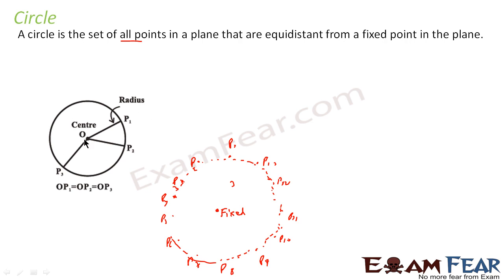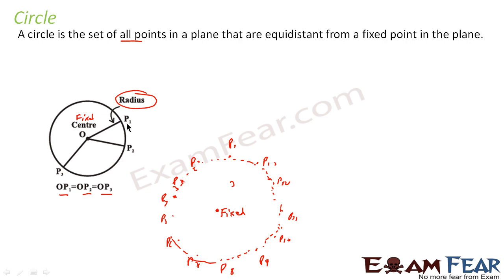If you draw all the possible points which are at 3 units from the fixed point, what you get is a circle. The center is the fixed point. We have so many points P1, P2, P3, and the distance between P3 and O is the same as the distance between P2 and O, which is the same as the distance between P1 and O. This common distance is called the radius.